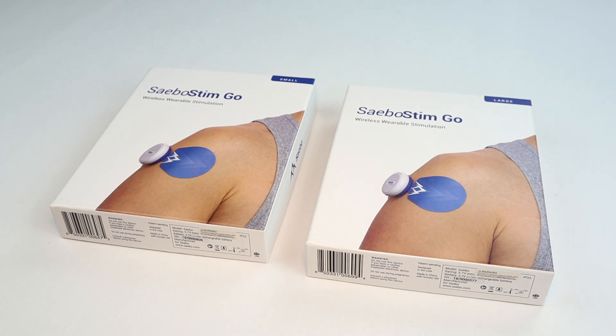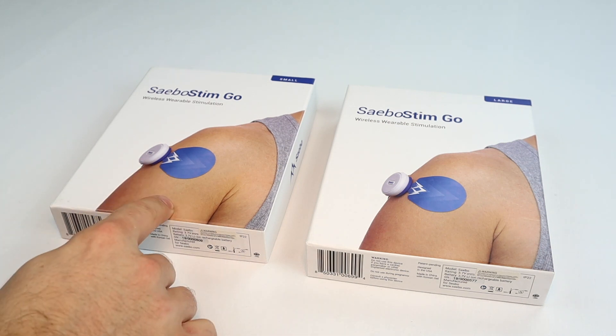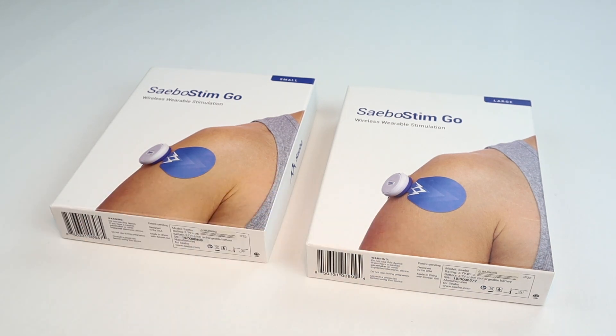So if you're ready to strengthen your muscles and improve your movement, let's open the box and talk about what's inside. Here you can see two boxes of the SableStim Go. It comes in two sizes, a small and a large. You have to do one measurement to figure out which one is best for you.